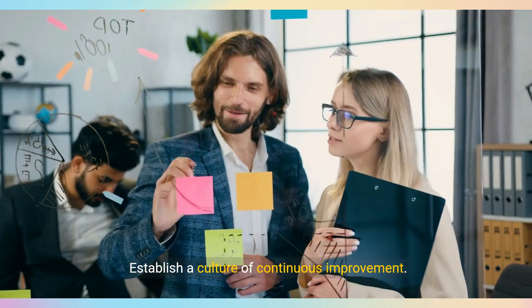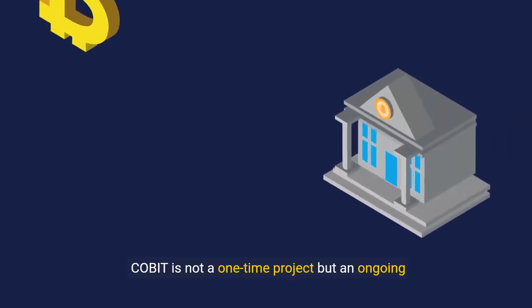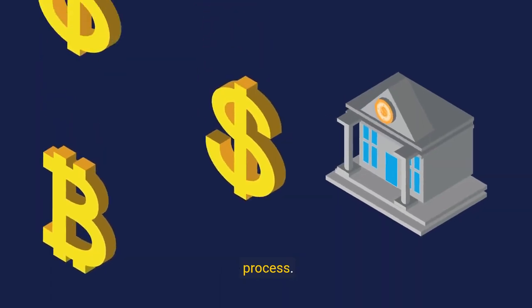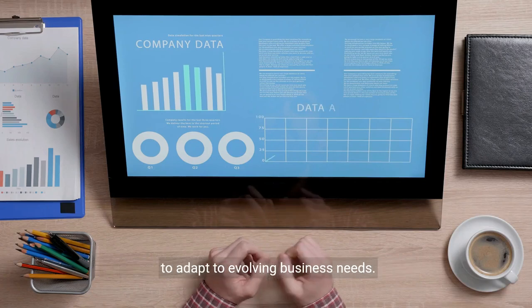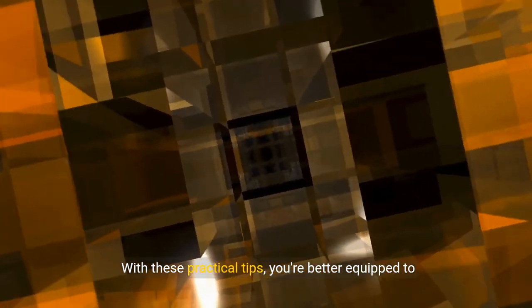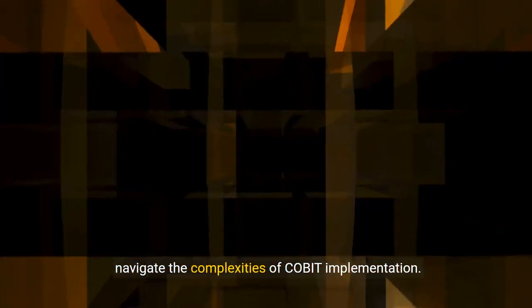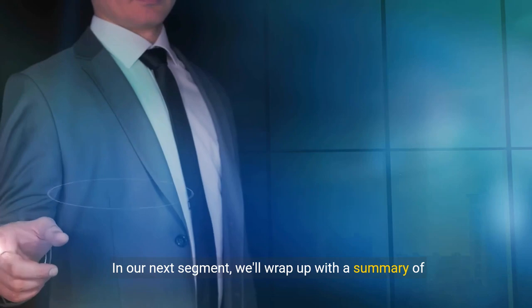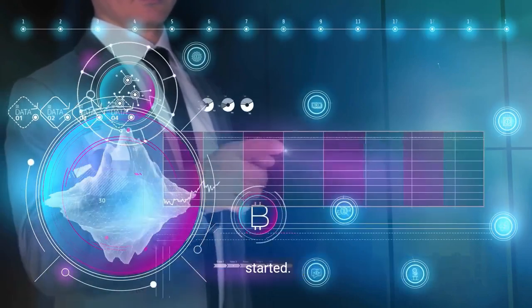Establish a culture of continuous improvement. COBIT is not a one-time project but an ongoing process. Monitor, review, and refine your practices regularly to adapt to evolving business needs. With these practical tips, you're better equipped to navigate the complexities of COBIT implementation. In our next segment, we'll wrap up with a summary of key points and actionable steps to help you get started.